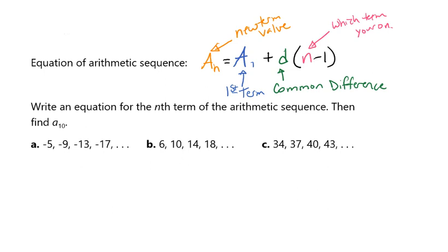Let's do some examples. I think it'll make some sense. So here we have to write an equation for the nth term of the arithmetic sequence and then find our a sub 10. So if we look and see what do we have? We're going to notice first that we need our first term. So here it is right there, first term. So our a sub 1 is negative 5.